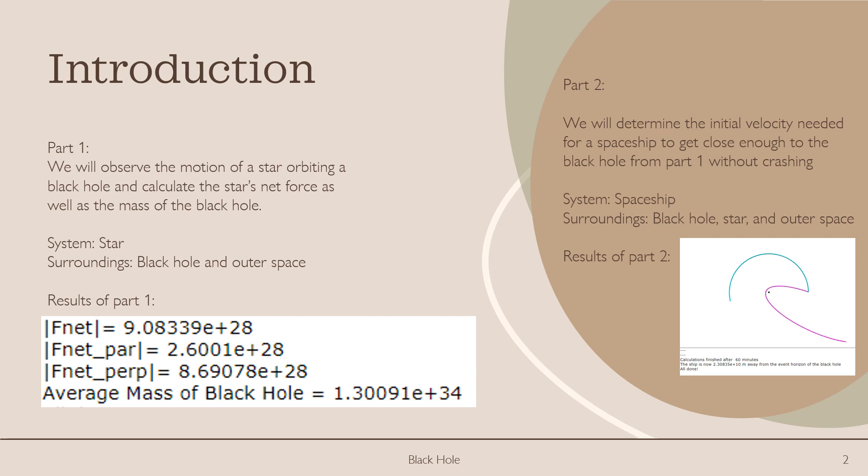Now if we shift over to the right of the screen, we'll look at part two. The goal of part two is to determine the initial velocity needed for a spaceship to get close enough to the black hole from part one without crashing. And in this, the system is a spaceship, and the surroundings are the black hole, the star, and outer space. This picture is the result of part two.